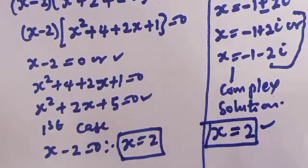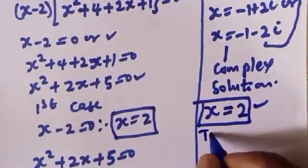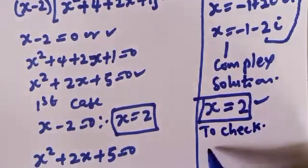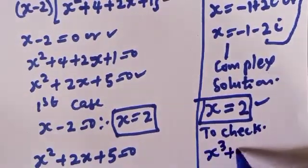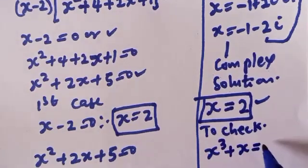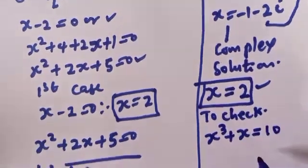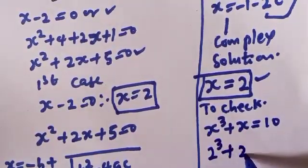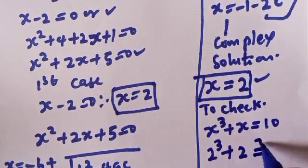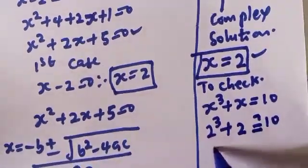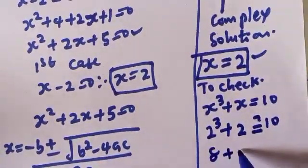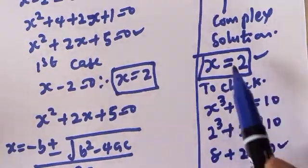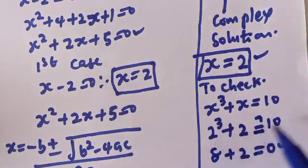We can check to confirm if our answer is right. To check: s raised to power 3 plus s must equal 10. When s is equal to 2, this is 2 raised to power 3 plus 2, which must equal 10. 2 raised to power 3 is 8, plus 2 equals 10. We satisfy the given equation at s equal to 2.